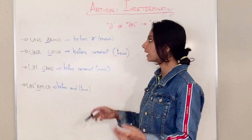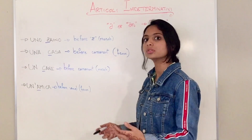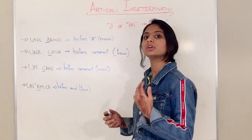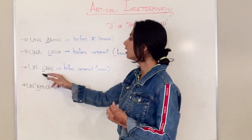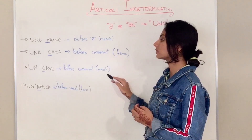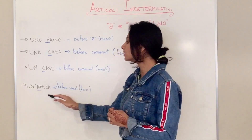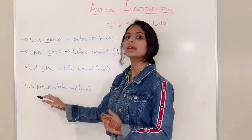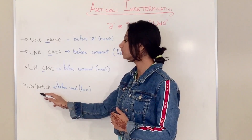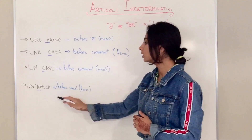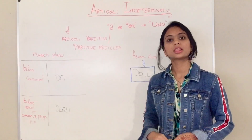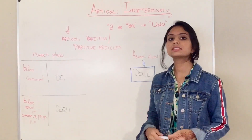You can go back in this video to check the rules and do some exercises or look up new words. Un cane — before consonant and masculine. Un'amica — there is un with an apostrophe because it's feminine and there is a vowel. So un'amica is before a vowel and feminine.